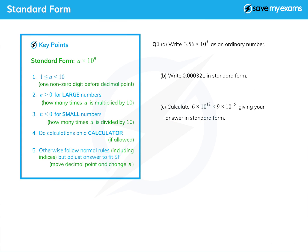In this question we're going to look at the basics of standard form. Standard form is when we express a number as one number times 10 to the power of a whole number, an integer.